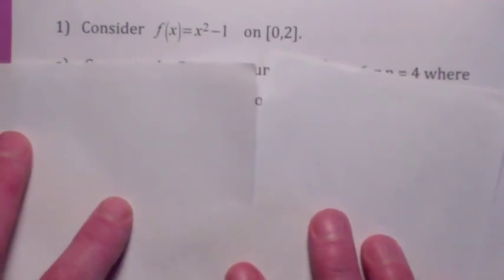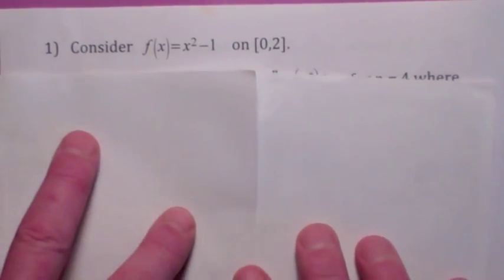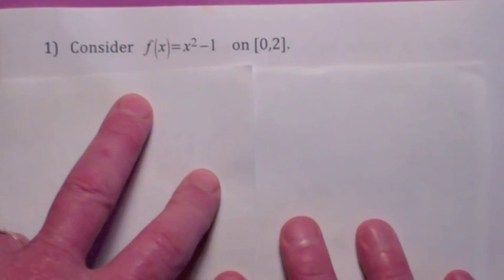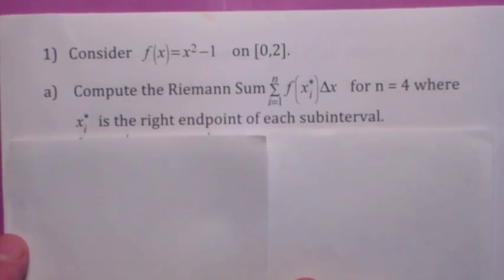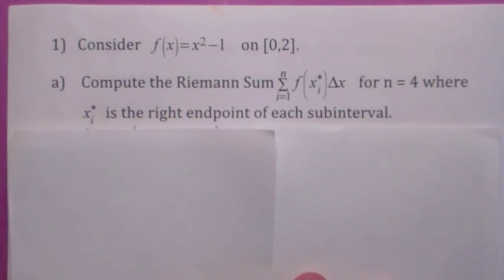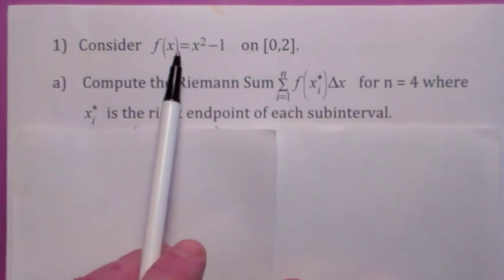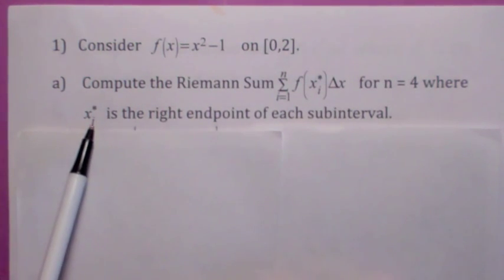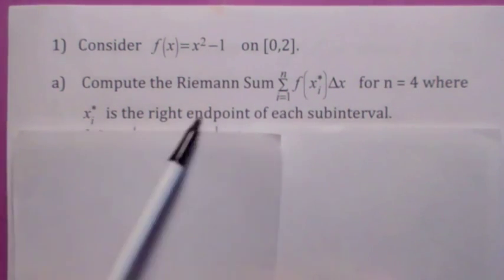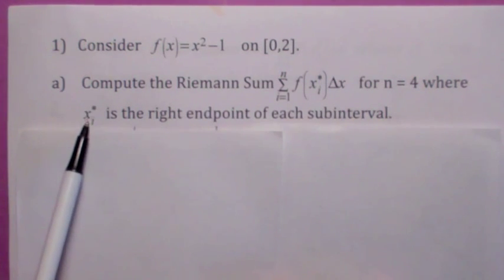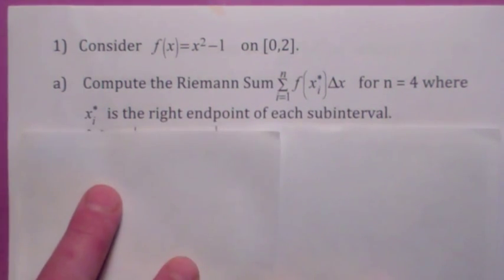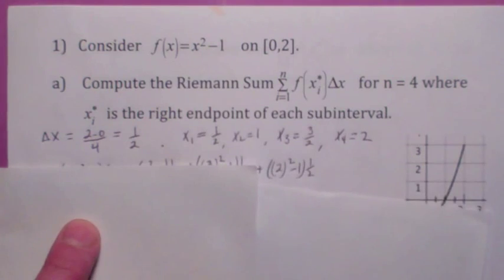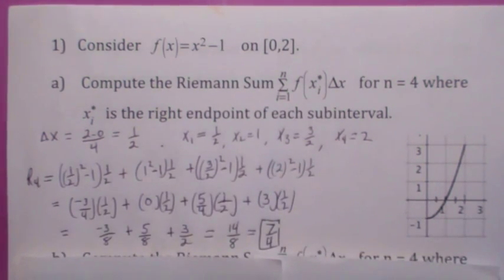Okay, so here we go. Let's find the definite integral. Well, we're going to eventually find the definite integral of this function, f(x) equals x² minus 1 on the interval 0 to 2. First of all, we're going to find the Riemann sum for this function on the interval 0 to 2 with four sub-intervals where x_i* is the right endpoint of each sub-interval. So in other words, x_i*, we would call that x_i, wouldn't we?